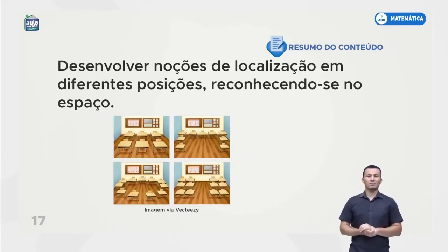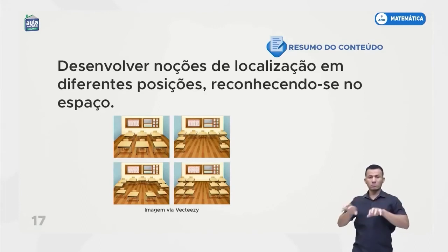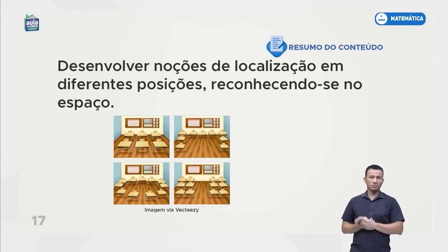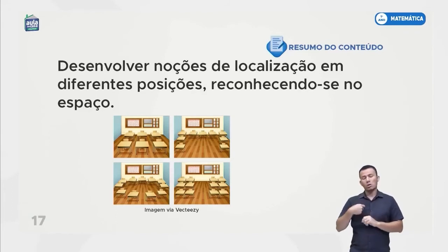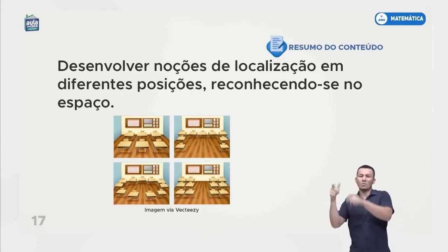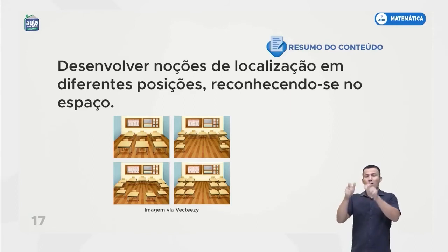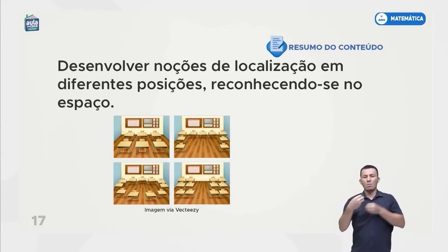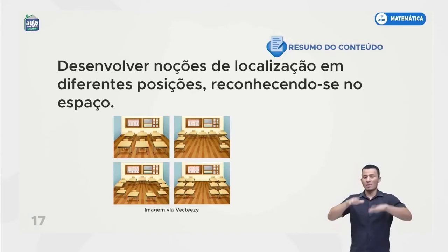Identificar posições e localizações a partir de diferentes pontos de referência. Dependendo da nossa localização, o ponto de referência muda — a gente pode estar em cima, embaixo, na direita, na esquerda, subindo, descendo. É igual na sala de aula: desenvolver noções de localização em diferentes posições, reconhecendo-se no espaço. Se a sala está arrumada de uma maneira, o meu local de sentar é um. Mas se ela está arrumada de outra maneira, eu já mudo a minha posição. É no mesmo espaço, só que na posição diferente.